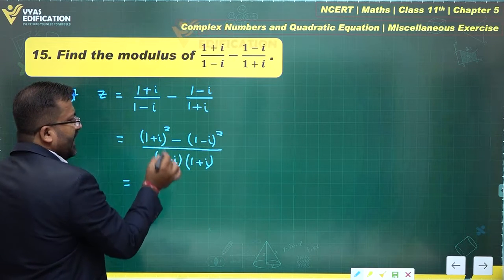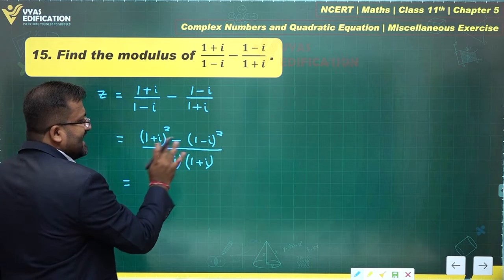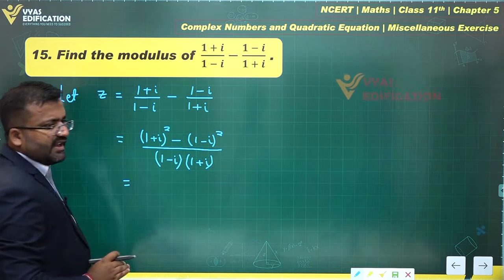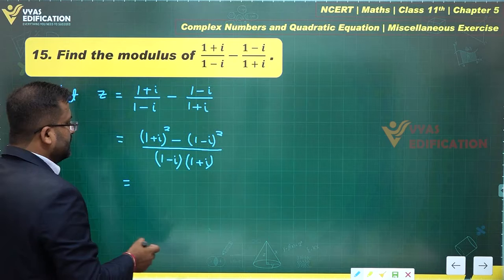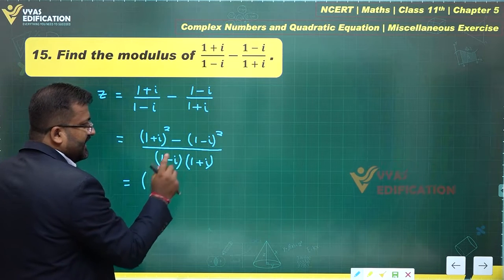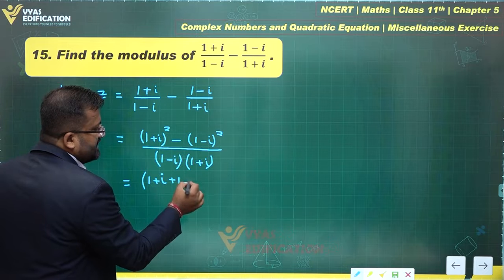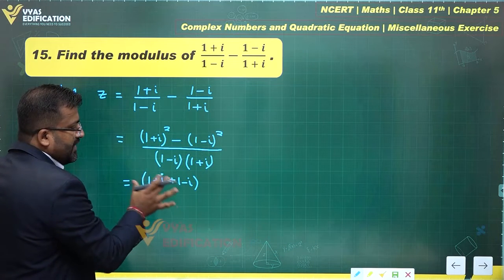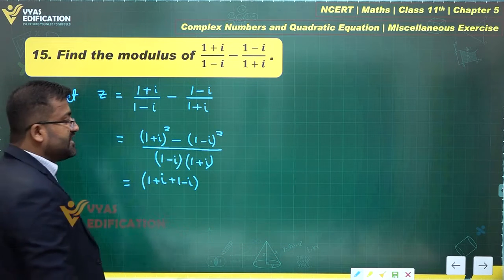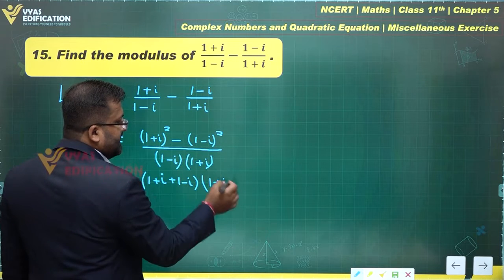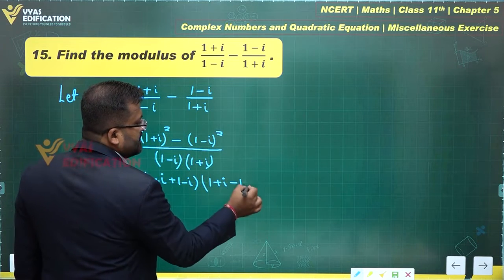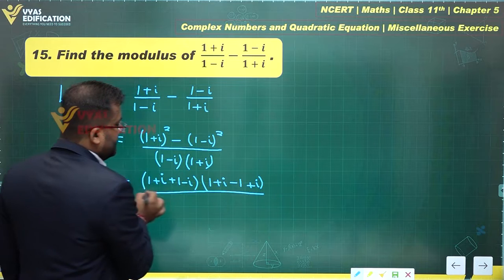This (1+i)² and this (1-i)² is actually a²-b². Can you observe that? So a²-b² can be written as (a+b)(a-b), which is (1+i+1-i)(1+i-1+i). This is what I get.